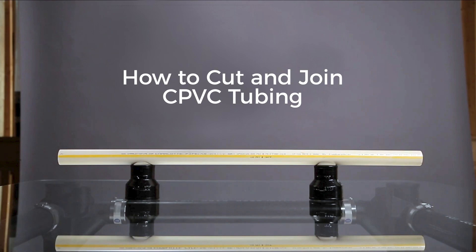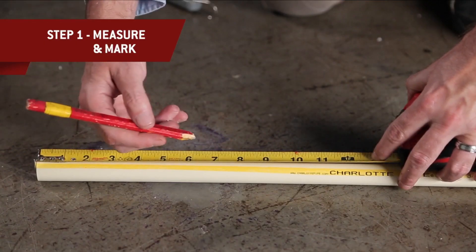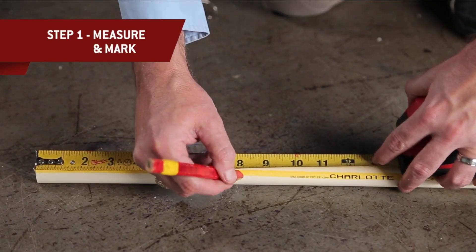FloGuard Gold is a hot and cold domestic water piping system. Measure and mark the required length of pipe.